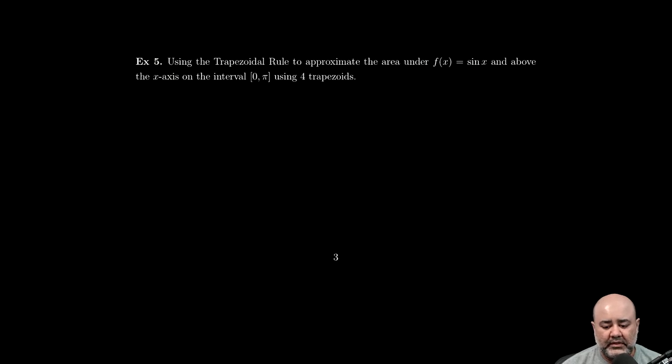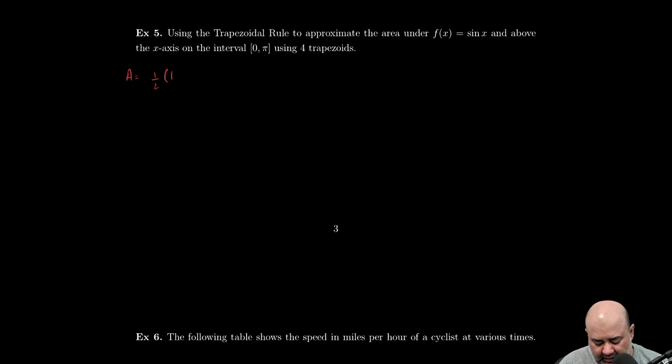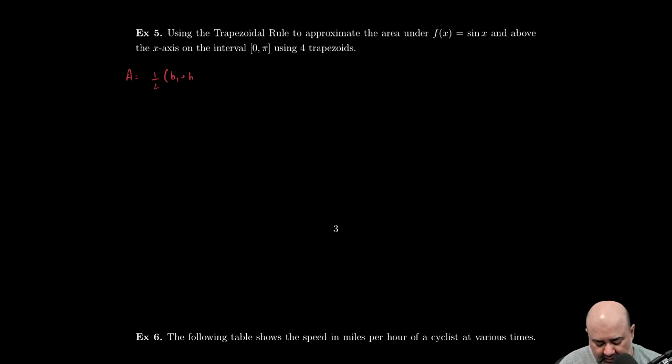All right, now we're heading into trapezoidal rule. Just to remind us all, the area of a trapezoid is one-half times the sum of the base, base one plus base two, times the height.